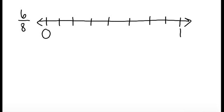It's time to label them. This is 0 eighths right where there's 0. This is 1 eighths, 2 eighths, 3 eighths, 4 eighths, 5 eighths, 6 eighths, 7 eighths, and 8 eighths. So I'm going to put my point at 6 eighths.